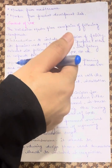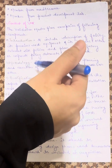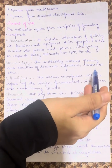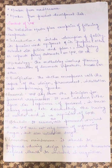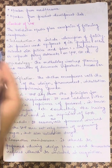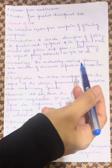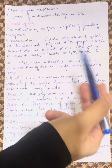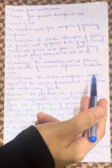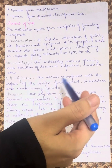Next, we have methodology, which involves planning and execution of document protocols, records, and others. Then we have qualification, where the section encompasses all aspects of design, procurement, installation, and commissioning processes.